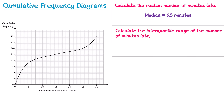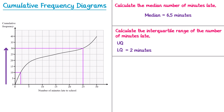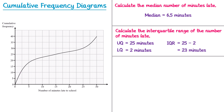The next thing they could ask is to calculate the interquartile range, which requires both the upper quartile and the lower quartile. For the lower quartile, we go to one quarter of the total cumulative frequency: one quarter of 40 is 10. We go up to 10, read across to the curve, and come down — the lower quartile is 2 minutes. For the upper quartile, three quarters of 40 is 30, so we go up to 30, across to the curve, and down — the upper quartile is 25 minutes. The interquartile range is 25 minus 2, which is 23 minutes. Both of these are really common follow-up questions to cumulative frequency diagrams.